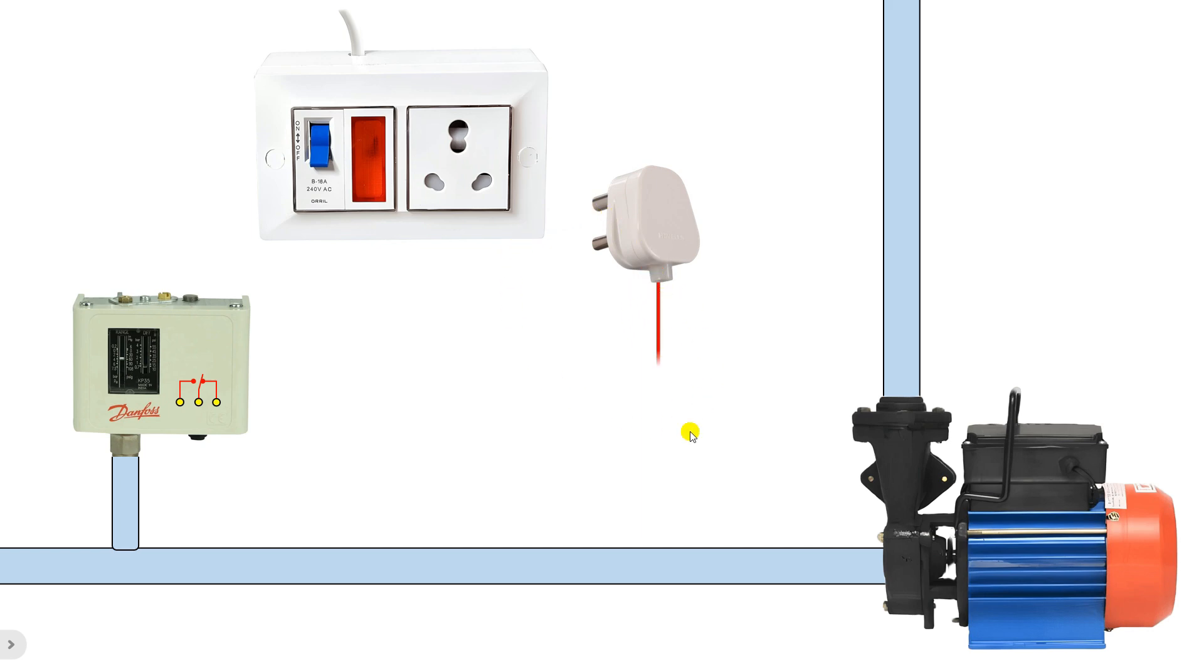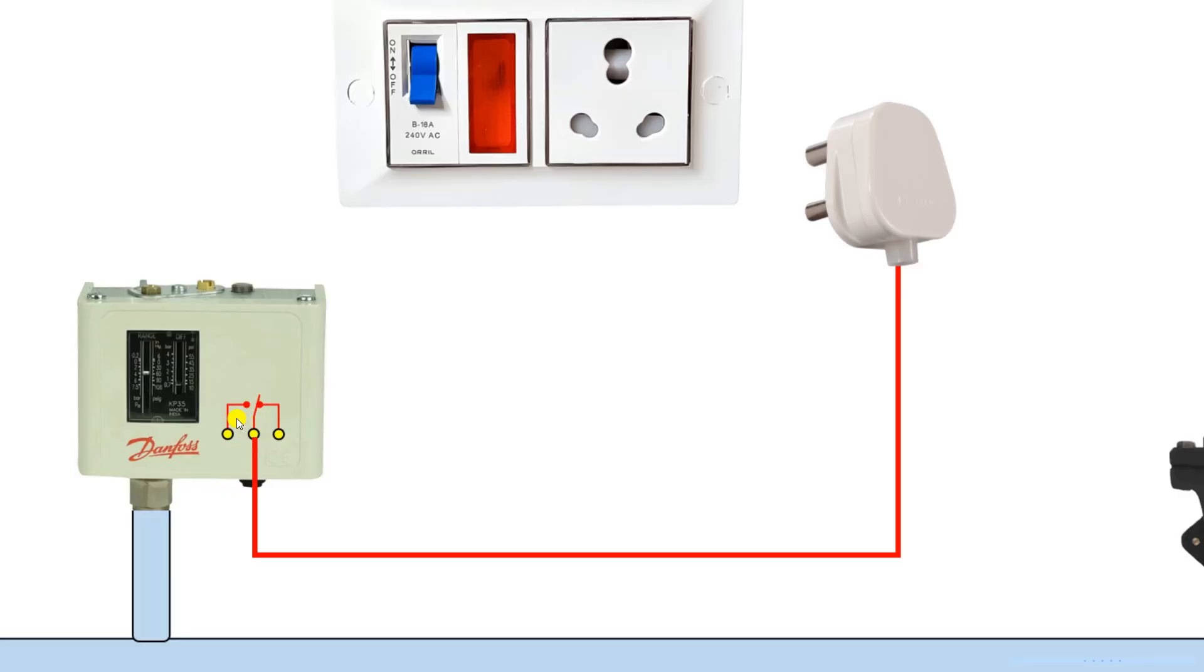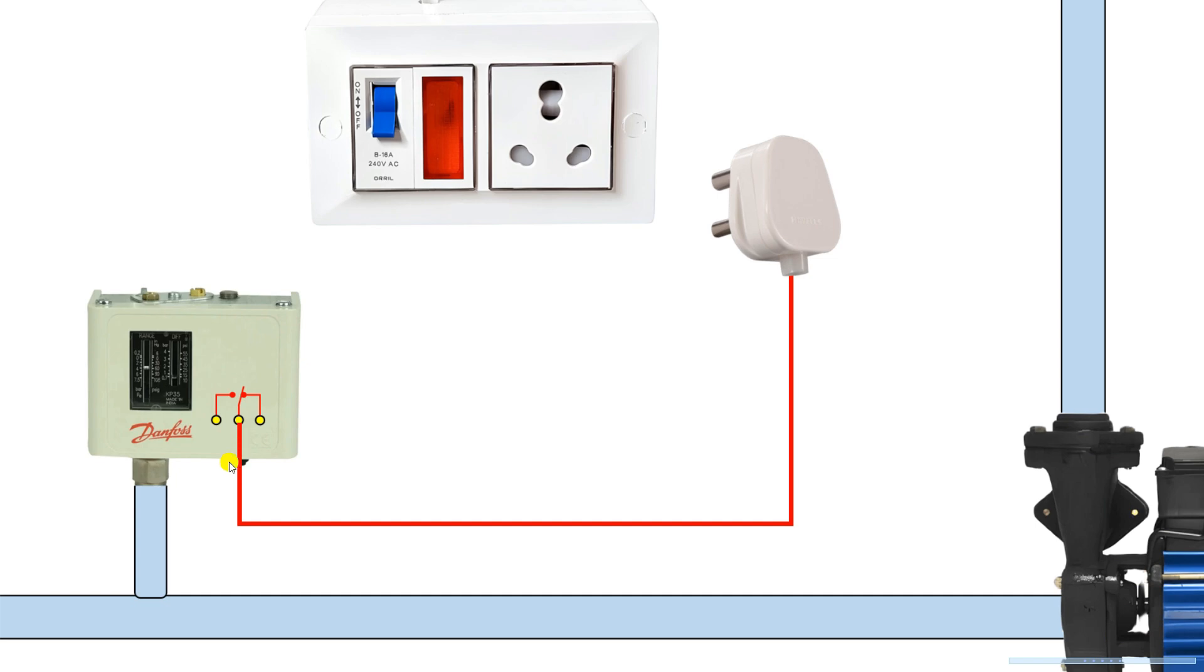If you open the pressure switch inside, you will find three terminals: one common terminal, the second will be NO (normally open), and the third will be NC (normally closed). You have to connect the phase supply wire with the common terminal. After this, from the NO contact here, you have to connect a wire and provide phase supply to the motor.